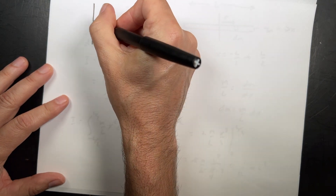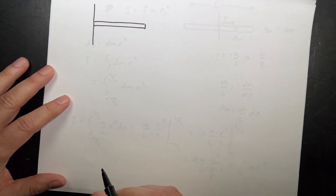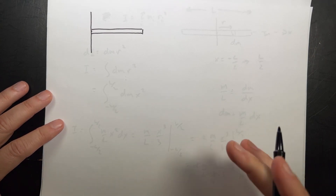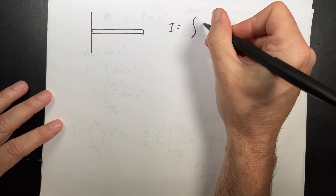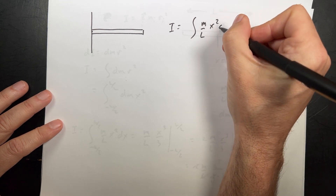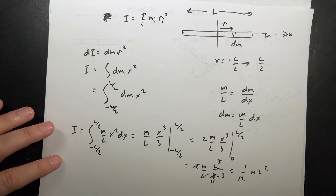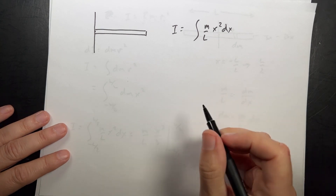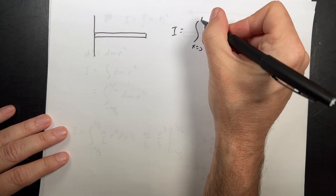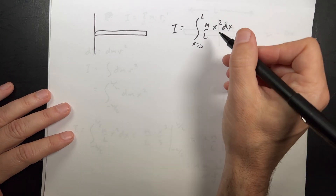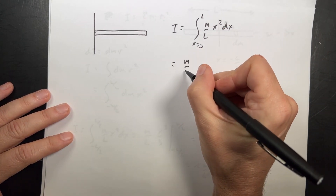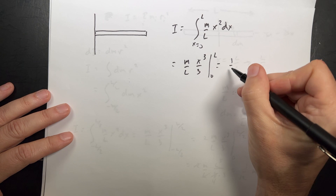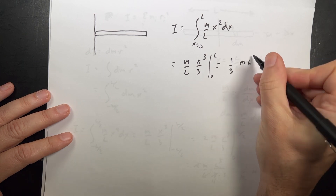What if I want to find the moment of inertia about one end? I'll position the stick so the end is at the origin. I get the same integrand — I = ∫ (M/L) x² dx — but now the limits of integration go from x = 0 to L. Evaluating gives I = (M/L)·[x³/3] from 0 to L = (1/3) M L².